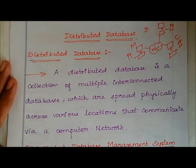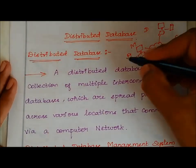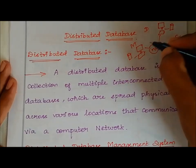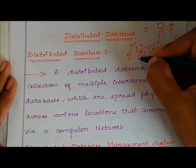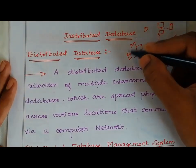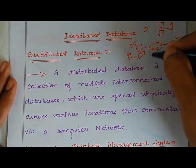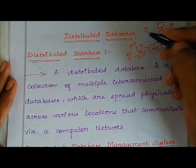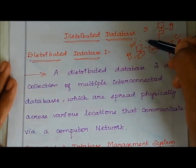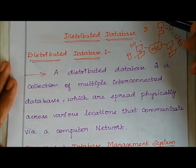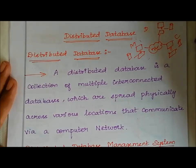A distributed database is a collection of multiple interconnected databases. For example, mobile users access one database, other users access another database, channel users access yet another database — just like a server at one location serving users.